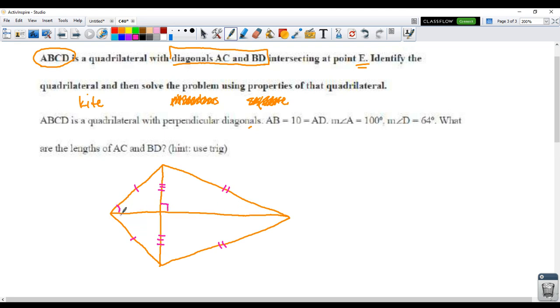These base angles, I guess we could call them, these ones also get bisected. So this, the longer diagonal cuts these ones in half. And then these angles here are actually congruent. So there are lots of things that are equal about a kite. We're going to use a lot of those here in about five minutes when we start solving stuff.